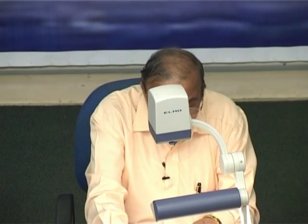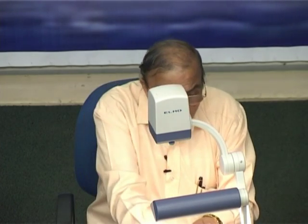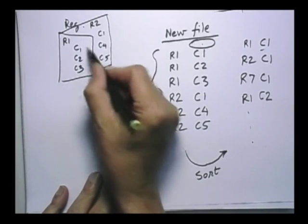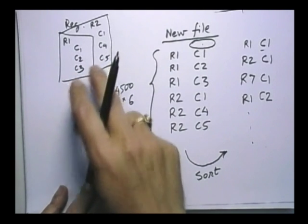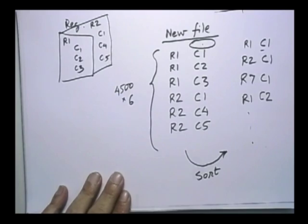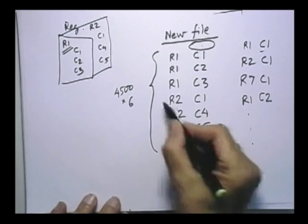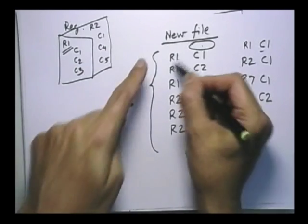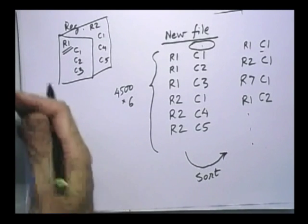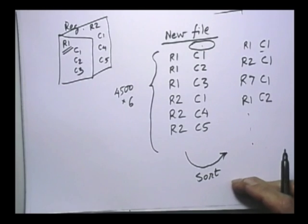The key insight: sorting was possible on this intermediate file because each record has a single identifiable sort field — the course code. The original registration form has no single sortable field; a student might write the same course in any slot position. By breaking the information into pieces that each represent one student-course association — each record expressing 'this student has registered for this course' — we can sort and extract information efficiently in one scan.